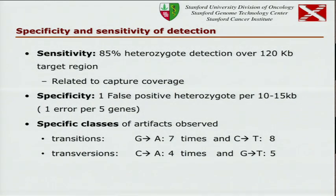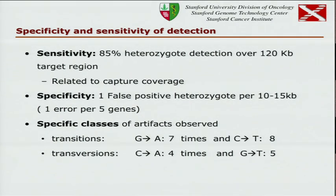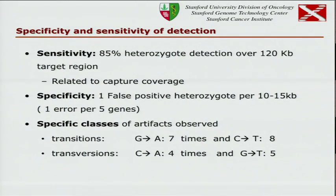The sensitivity is that we see about 85% of the heterozygotes detected in normal also detected in FFPE. That's per probe, so when we put multiple probes per position that number goes up. The classes of artifacts observed are transitions — probably due to deaminations — G to A and C to T, and some transversions. Basically the consensus is G or C going to A or T, and not at a very high rate: 1 per 10 kb.